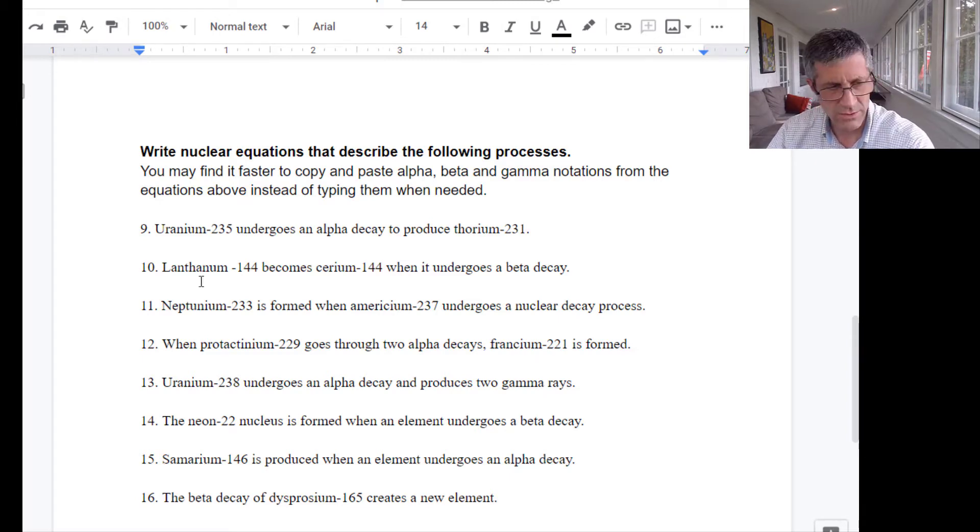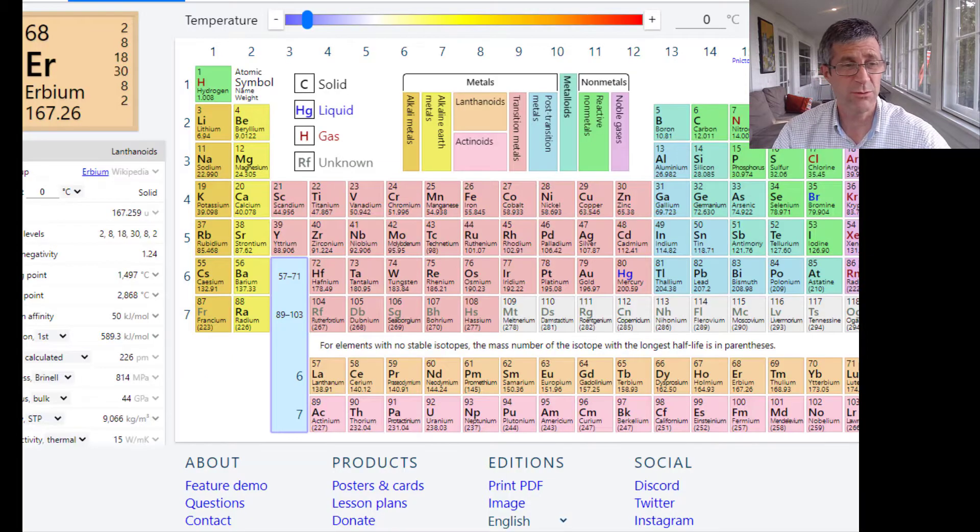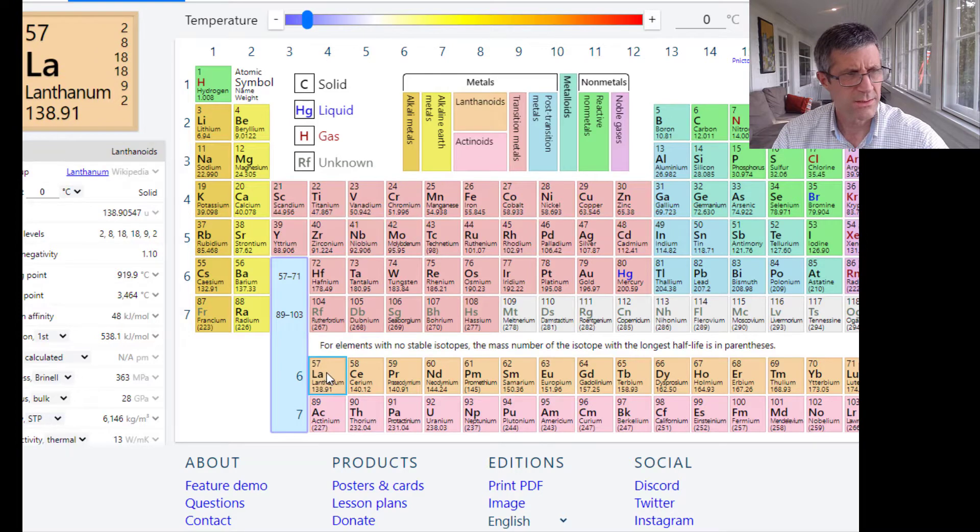Lanthanum-144. So I'm going to write this one down so I don't make silly mistakes. Lanthanum-144 goes into cerium-144 when it undergoes beta decay. Okay, I'm going to remember the symbols for this. So let's look it up. You have a periodic table, might as well use it. So lanthanum, there it is. It's number 57. So the symbol is LA and it has 57 protons.